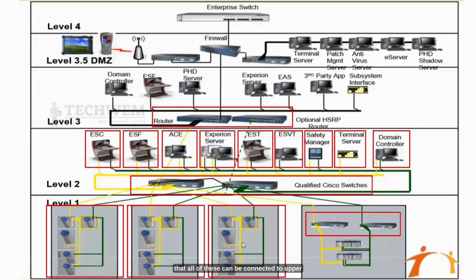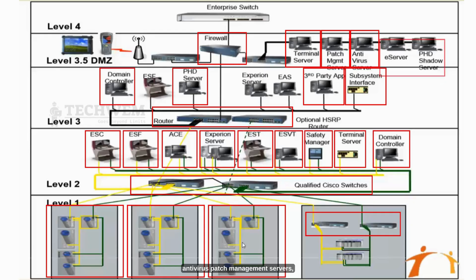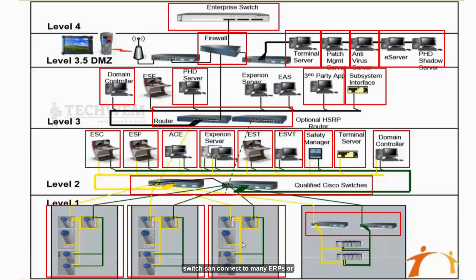All of these can be connected to the upper layer via a router to different PHD servers, other domain controllers, subsystems, third-party applications, and so on. You can connect that switch to the firewall, which allows some terminal servers, management servers, antivirus and patch management servers, PHD shadow servers, and demilitarized zone components through. Finally, this data, after passing through the firewall, feeds to your enterprise switch, which can connect to many ERPs or other applications. There are a lot of things to discuss, but this is a general overview — if you have any questions, please put your comments below.